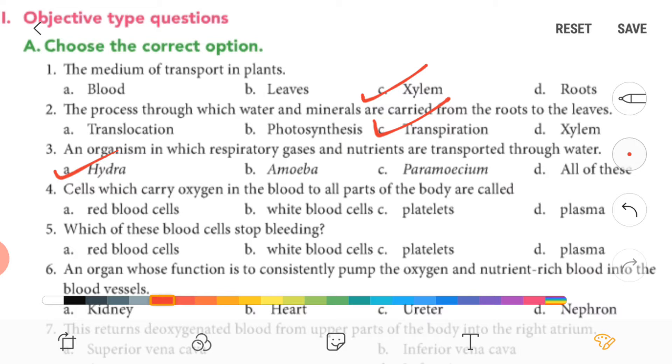Now fourth one, cells which carry oxygen in the blood to all parts of the body are called red blood cells.